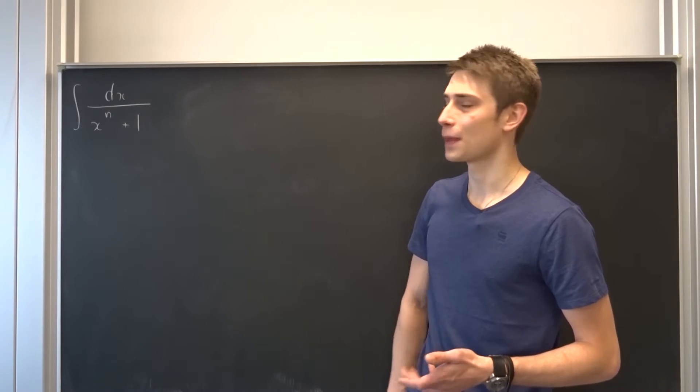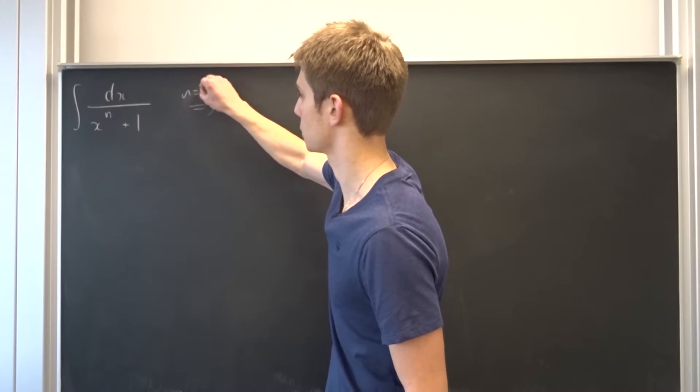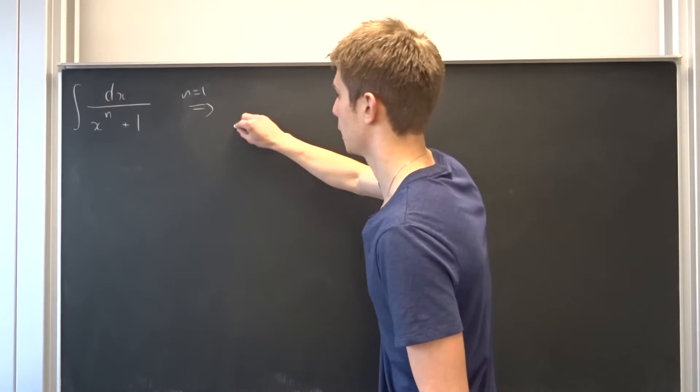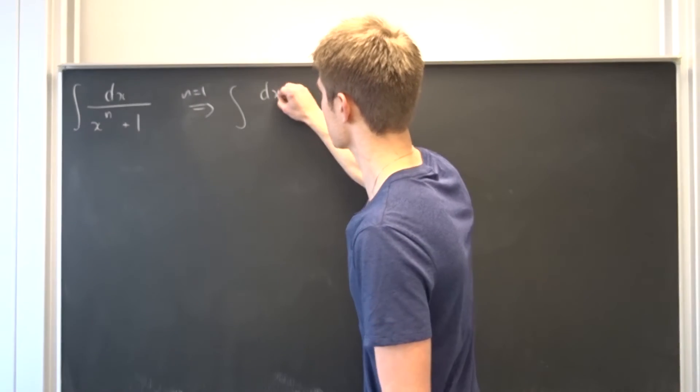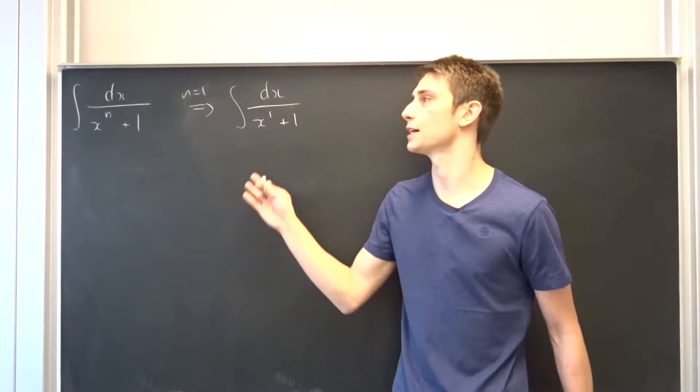Okay, so we are going to start off with the simplest case today. We are going to say that n equals to 1. So what would we end up with? So that's the integral of dx over x to the first power plus 1, and that's quite a simple case.